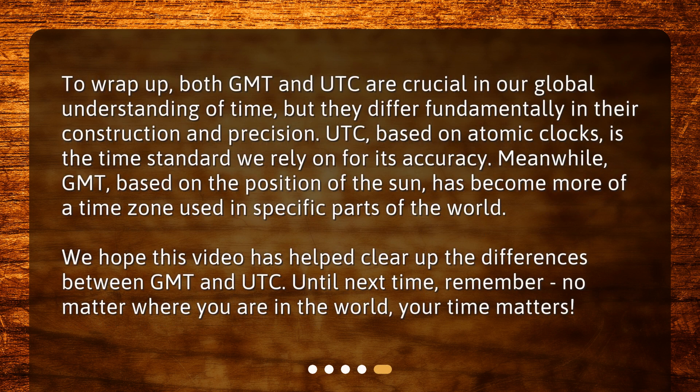To wrap up, both GMT and UTC are crucial in our global understanding of time, but they differ fundamentally in their construction and precision. UTC, based on atomic clocks, is the time standard we rely on for its accuracy. Meanwhile, GMT, based on the position of the Sun, has become more of a time zone used in specific parts of the world. We hope this video has helped clear up the differences between GMT and UTC. Until next time, remember: no matter where you are in the world, your time matters.